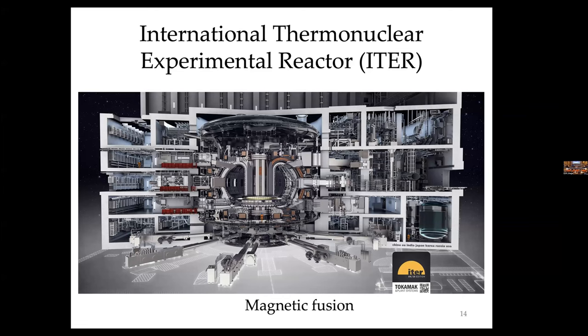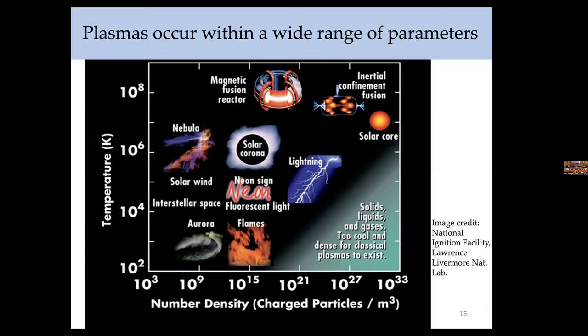ITER is being built in southern France by a consortium of nations. I like this plot showing that plasmas occur within many orders of magnitude in temperature and density — which is not true for solids, gases, and liquids. It shows the different types of plasmas.